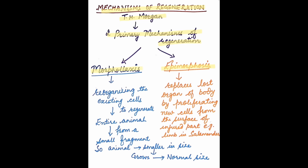In morpholexis, the entire body with all the missing structures can be reconstituted into an entire animal. It involves reorganizing the existing cells to regenerate the entire animal from a small fragment, with little or no growth. The regenerated animal is smaller in size but later grows to attain its normal size.